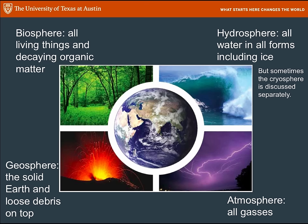What are the earth spheres that we're talking about? Geologists define four, sometimes five. The biosphere, which includes all living things including decaying organic matter. The geosphere, which is the solid earth and the loose debris at the top. The atmosphere, which is all of the gases. And the hydrosphere, which is all of the water, including ice. Some people will pull out the cryosphere separately and discuss ice separately, depending on what problem you're trying to solve.